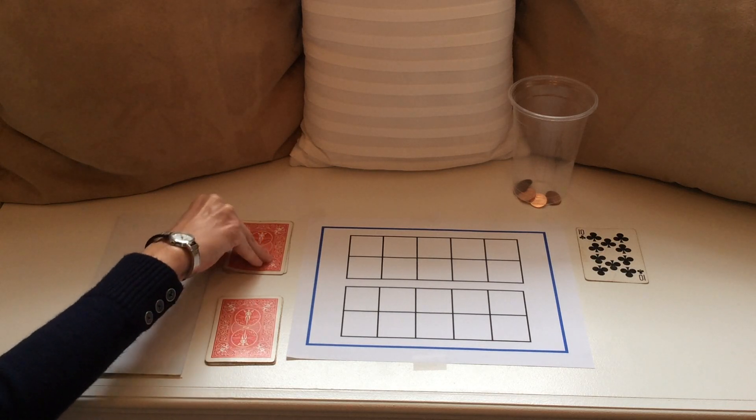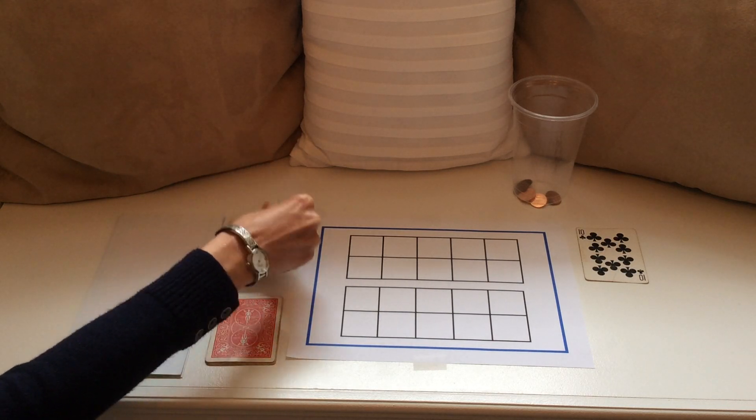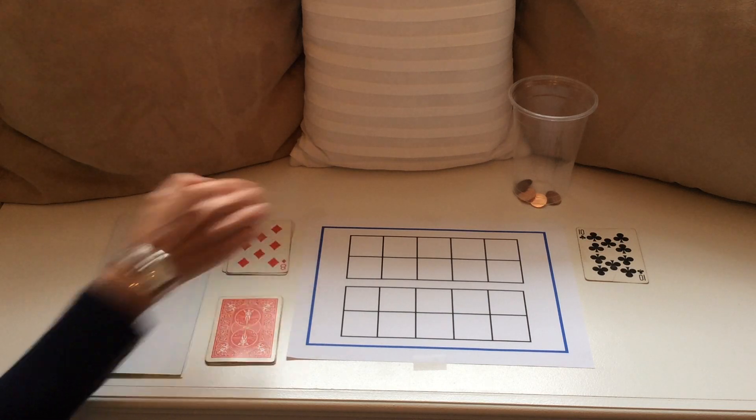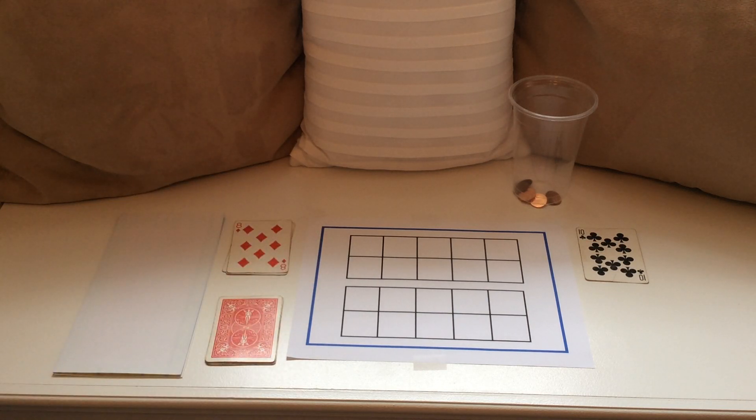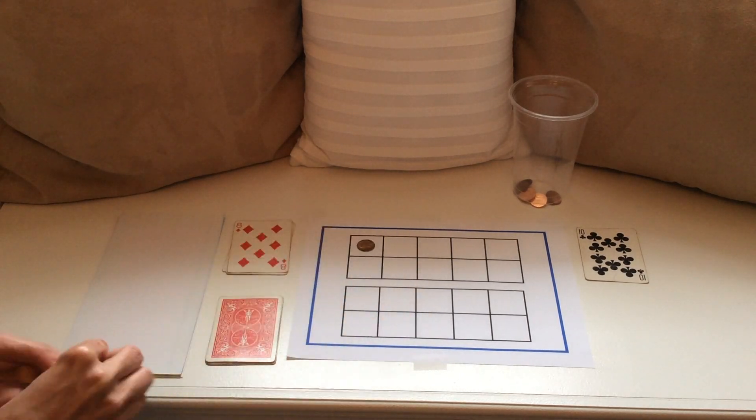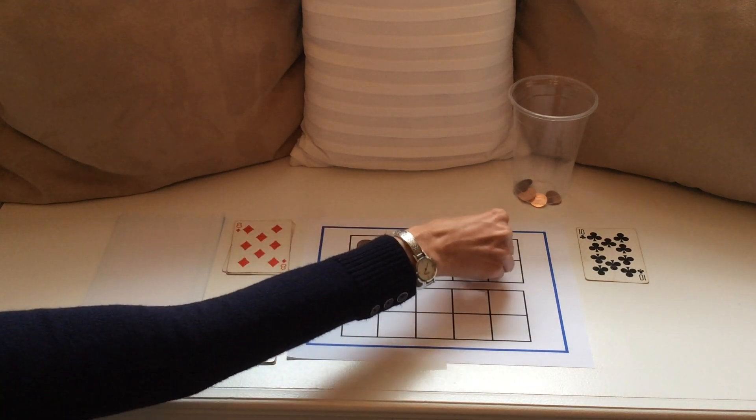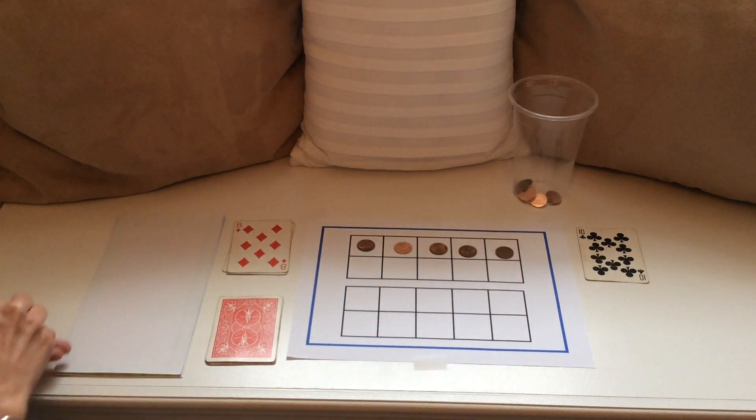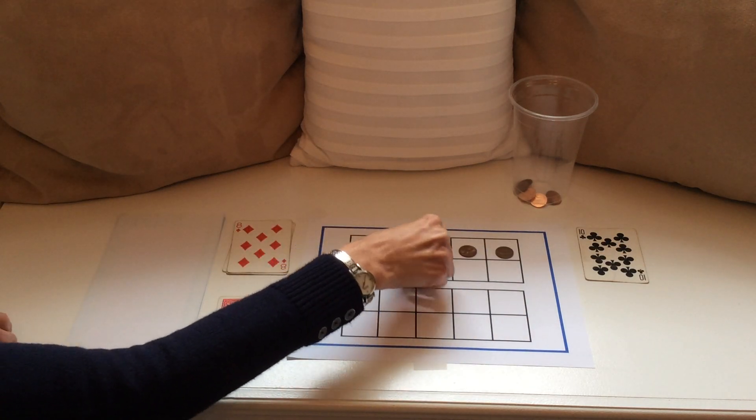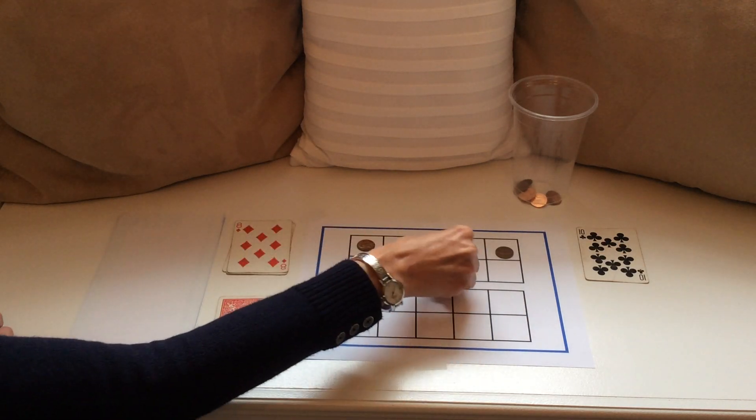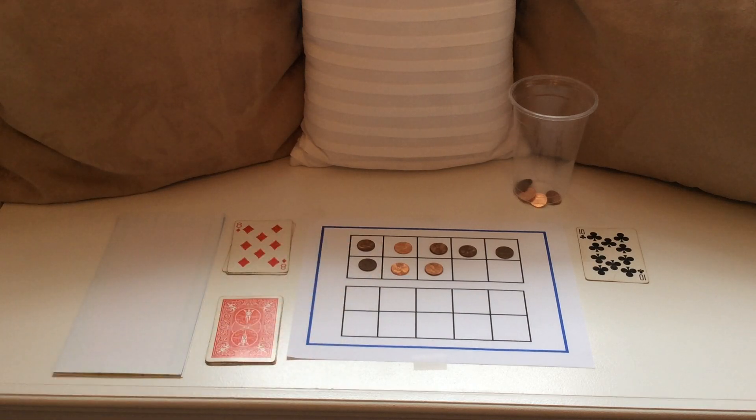I'm going to flip over the first part or first addend and it's an 8, which means that I have to show 8 on the double 10s frame. I'll show 8 on the top 10 frame. 1, 2, 3, 4, 5, 6, 7, 8. This represents our first number.